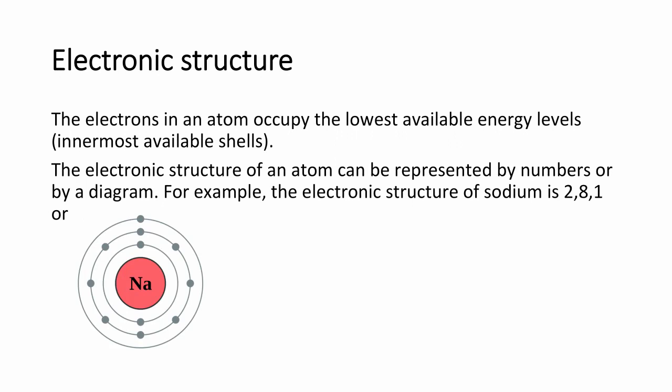You also need to know about the electronic structure of atoms. Electrons in an atom occupy energy levels or energy shells and always fill the energy shells closest to the nucleus, because the nucleus is attracting the electrons. The maximum number of electrons per shell is: 2 in the first shell, 8 in the second shell, 8 in the third shell, and 2 in the fourth — you only need to go up to atomic number 20, calcium. For example, the electronic structure of sodium can be written as 2.8.1.